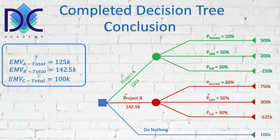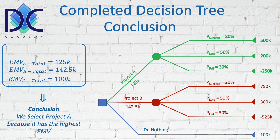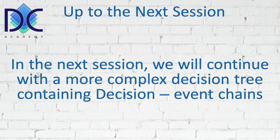Comparing the results: Project A has a total EMV of 125k, Project B has 142.5k, and Do Nothing has 100k. Based on this, Project B has the highest expected monetary value and is therefore our selection. We choose the project with the highest expected monetary value. This simple decision tree is comparable with the decision method under risk because we only have a simple branched tree.